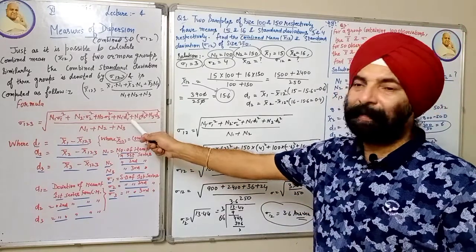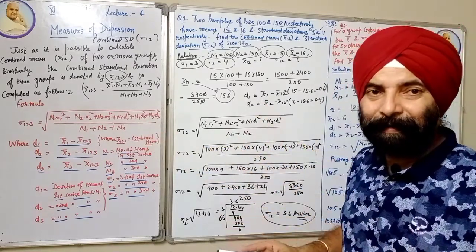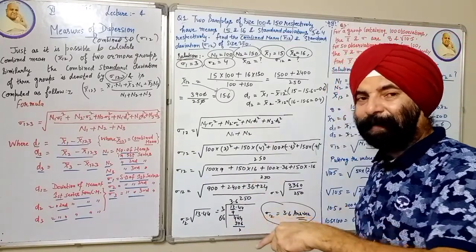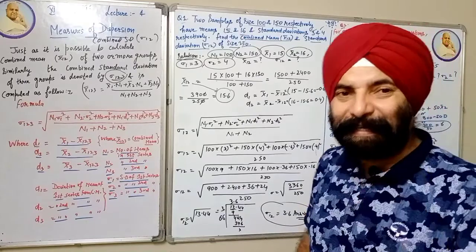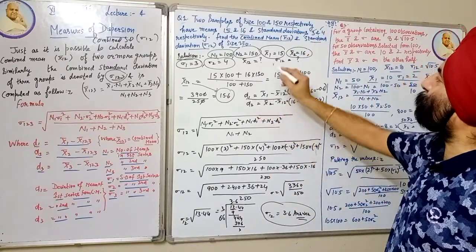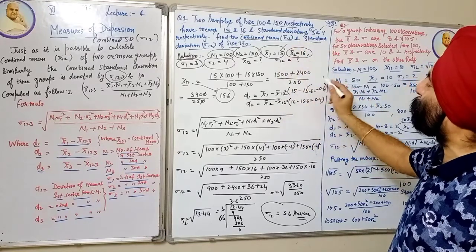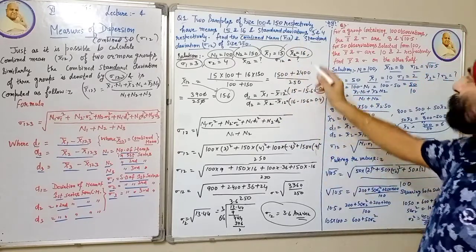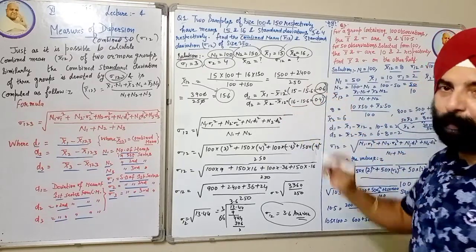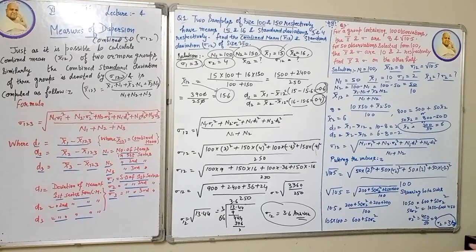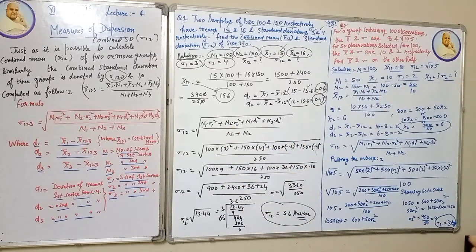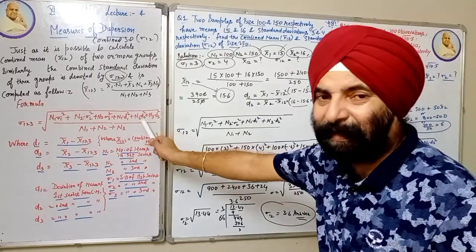Now we need D1 and D2. D1 = mean of first series − combined mean = 15 − 15.6 = −0.6. D2 = mean of second series − combined mean = 16 − 15.6 = +0.4. All values are now available; we just need to put them into the formula.